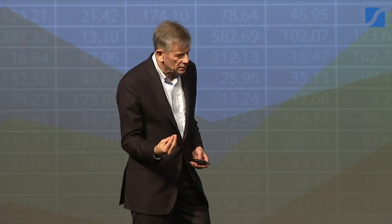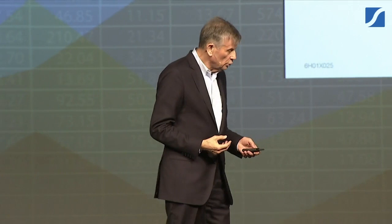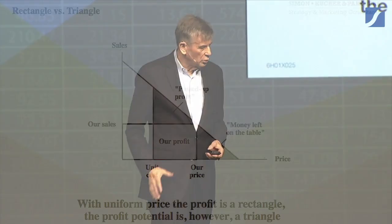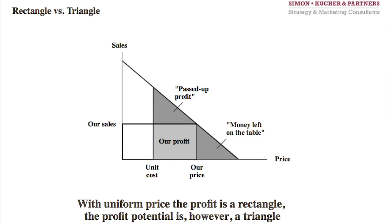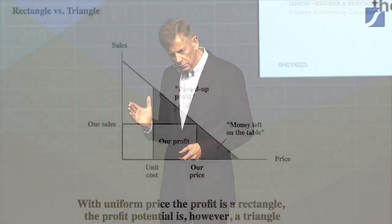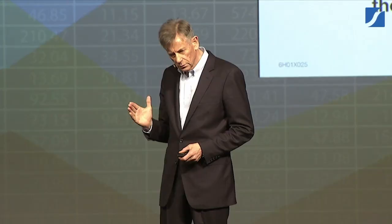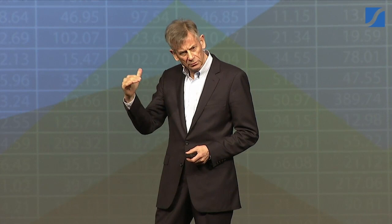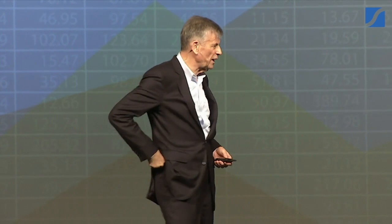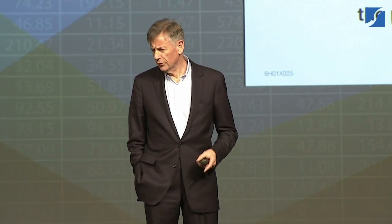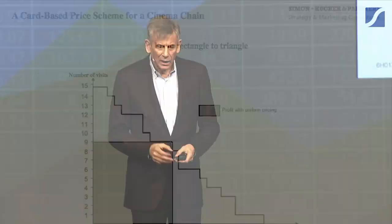That's a different issue. And if you only have one price — what we call the uniform price — you are only cutting a rectangle out of the triangle. You have one price and you sell a certain volume, so you cannot harvest the triangle, obviously, because you are creating the rectangle. It took me 20 years as a professor to express it in that simple way: the challenge is to go from rectangle to triangle. Let me show you an application.